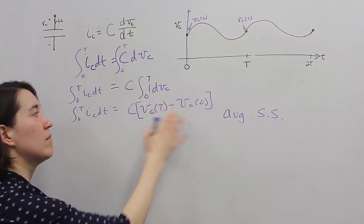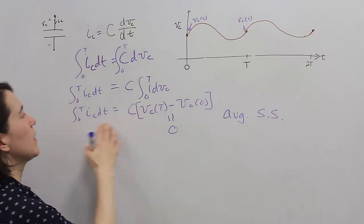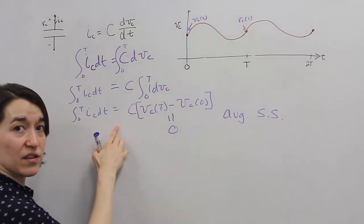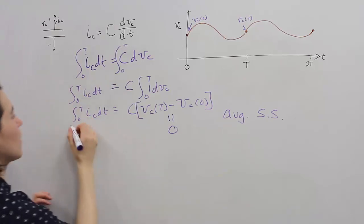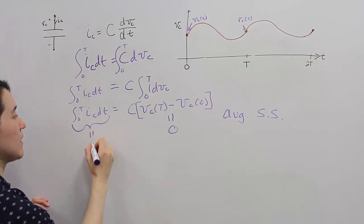If this is 0, C is some value, it means that this part also has to be 0. So, in this state, this also must equal 0.